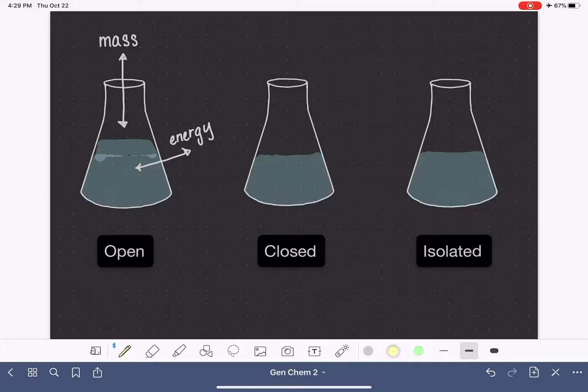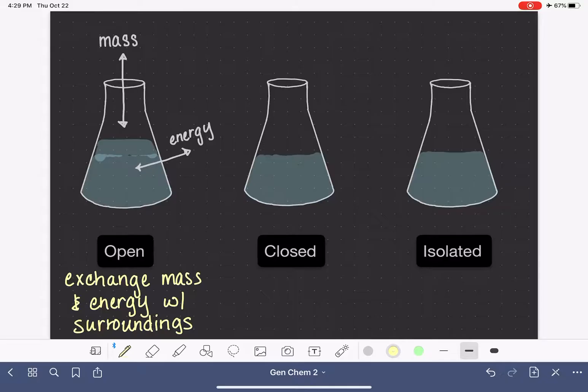So let's write down a definition: an open system is one that can exchange both mass and energy with the surroundings. And again, as I said, this is the most common type of system that we work with in chemistry.